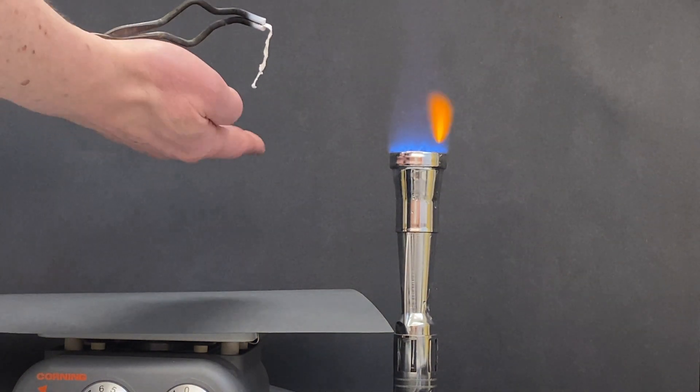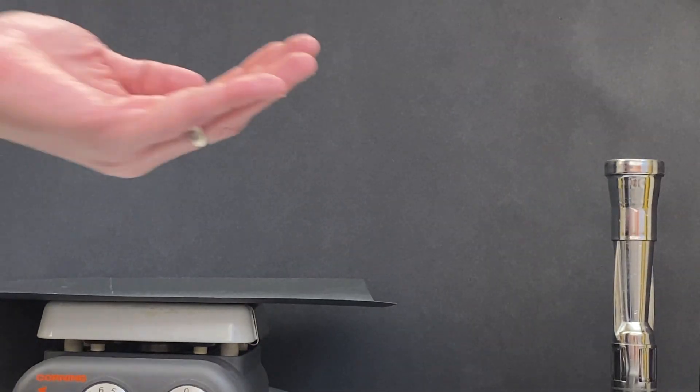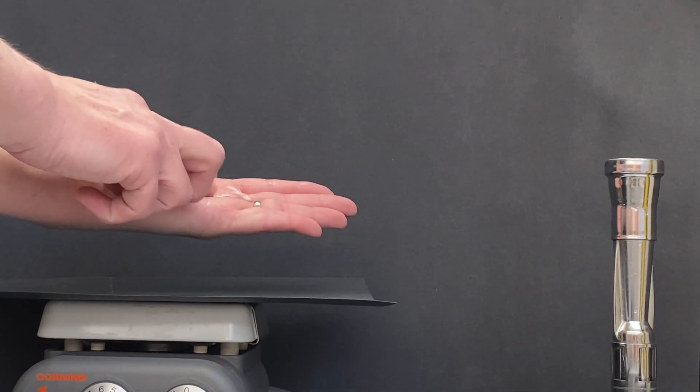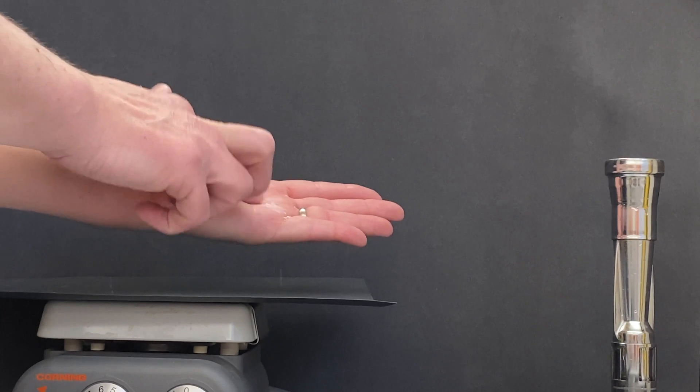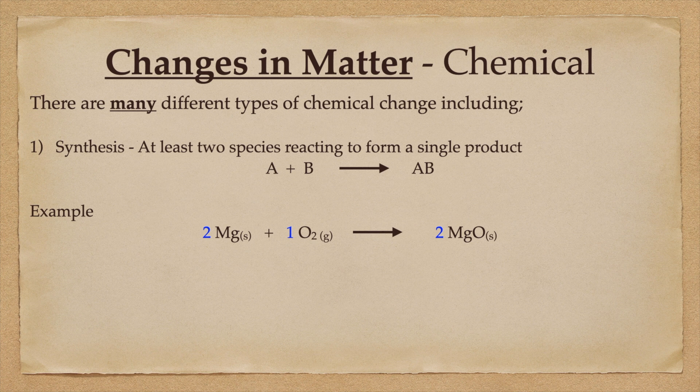Note that the product has completely different properties than the reactants. The reactants are metallic, shiny, malleable, while the product is white and chalky, brittle and powdery magnesium oxide.